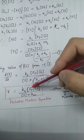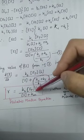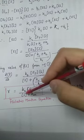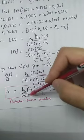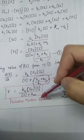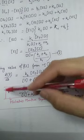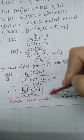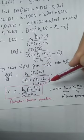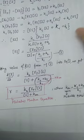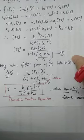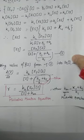Our equation becomes: rate of reaction equals K2 times total enzyme concentration times substrate concentration, divided by substrate concentration plus KM. This equation represents the Michaelis-Menten equation. We will be discussing the different cases of this in the next video.